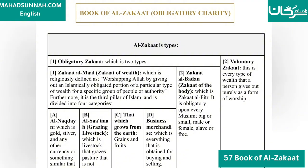The second type of obligatory Zakat is Zakatul Badan, the Zakat of the Body, which is Zakatul Fitr. It is obligatory upon every Muslim — big or small, male or female, slave or free. The second is voluntary Zakat, which is every type of wealth that a person gives out purely as a form of worship.